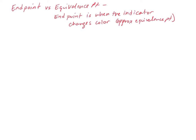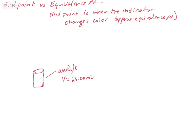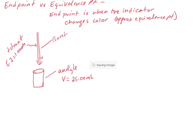A typical titration looks like this: you put your analyte into a container such as a beaker or Erlenmeyer flask, and you measure out a very careful volume — for example, 25.00 mL — so you accurately know the volume of the analyte. You need that volume because to calculate concentration you need moles and volume. The other piece of equipment you need is a burette containing your titrant, for which you know the concentration very accurately — for example, 1.000 molar NaOH. Let's say the analyte in this case is HCl at an unknown concentration.